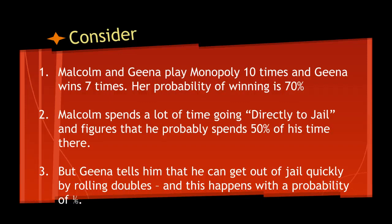In our first example, we have two players, Malcolm and Gina. They're playing Monopoly and they're going to play it ten times. Gina wins seven out of those ten times, so her probability of winning is 70%. Now Malcolm spends a lot of time going directly to jail — he figures that he spends half of his time in jail. Gina tells him that he can get out of jail quickly by rolling doubles, and she tells him that this happens with a probability of one in six, or one-sixth.